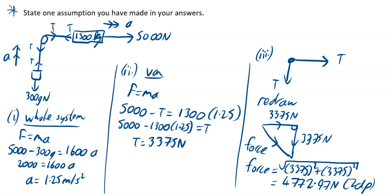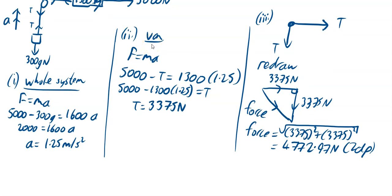Notice it says here as well: state one assumption you have made in your answers. The assumption we are going to say we've made throughout is that there is no resistance — no resistance on the pulley, no resistance on the van.